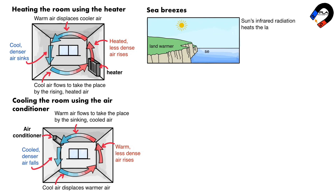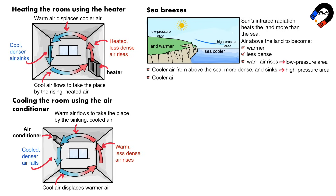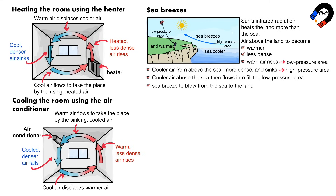Sea breezes: during the day, the sun's infrared radiation heats the land more than the sea. This causes the air above the land to become warmer and less dense than the air above the sea. The warm air above the land rises, creating a low pressure area. Cooler, denser air from above the sea sinks, creating a high pressure area, and then flows in to fill the low pressure area. This convection current causes a sea breeze to blow from the sea to the land.